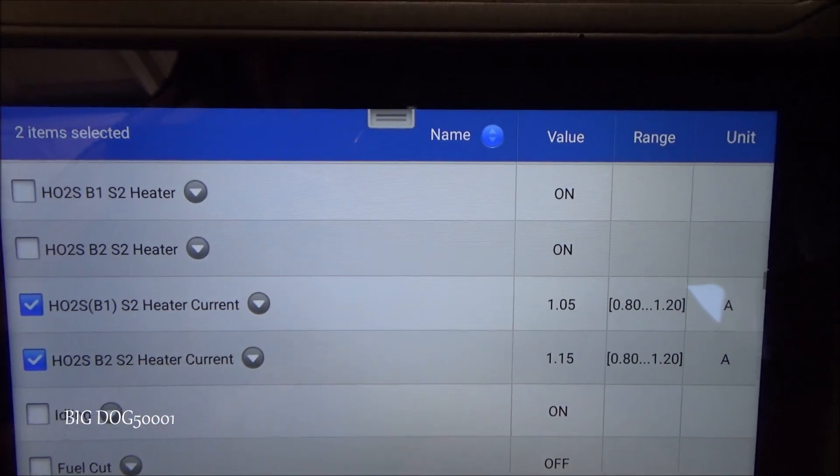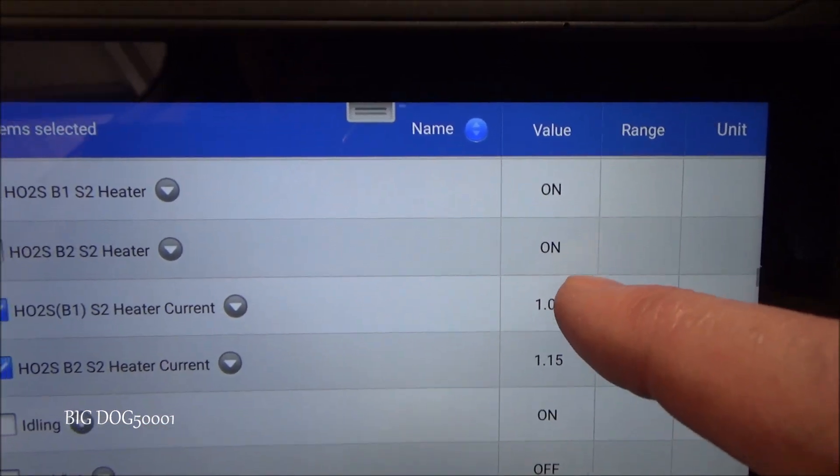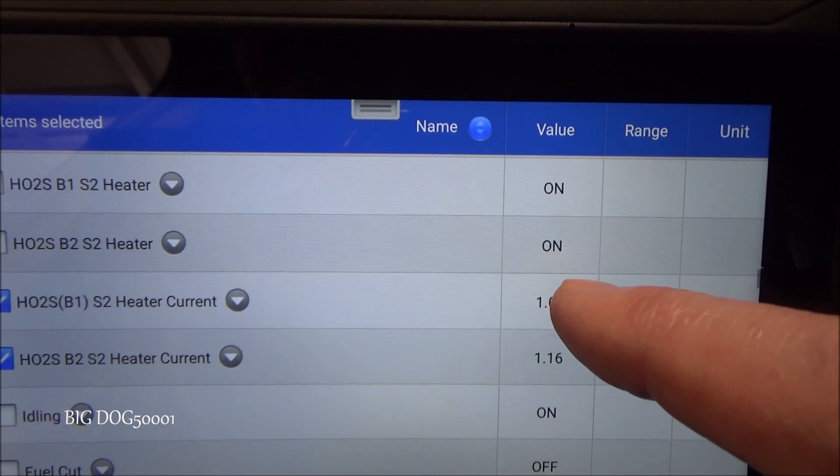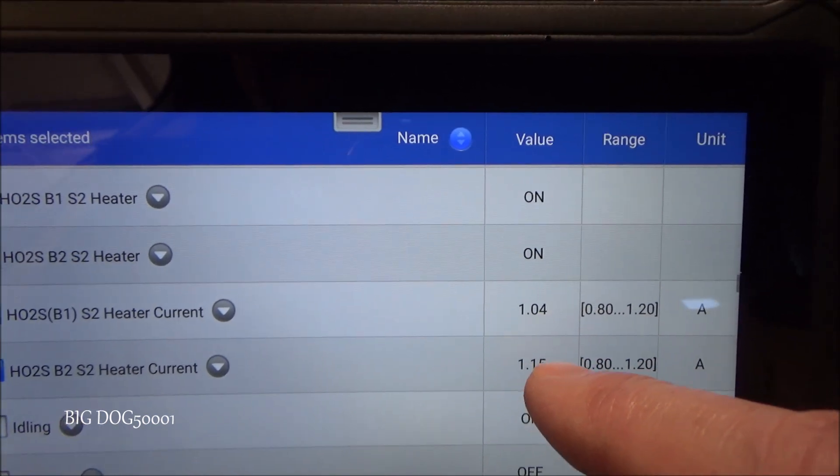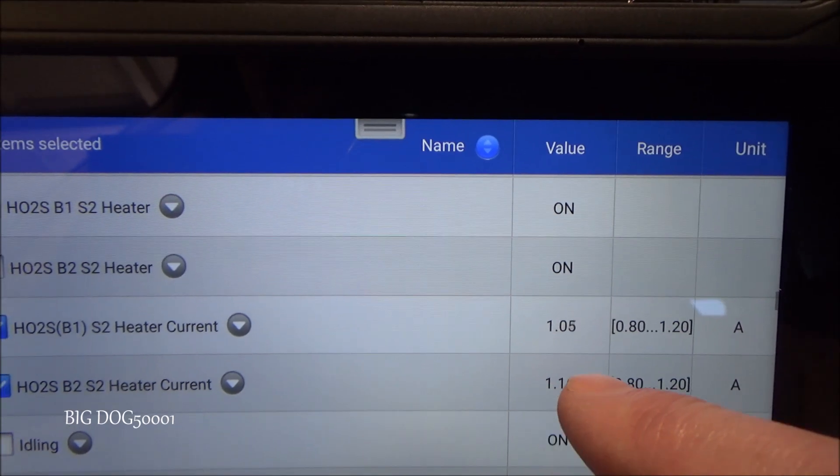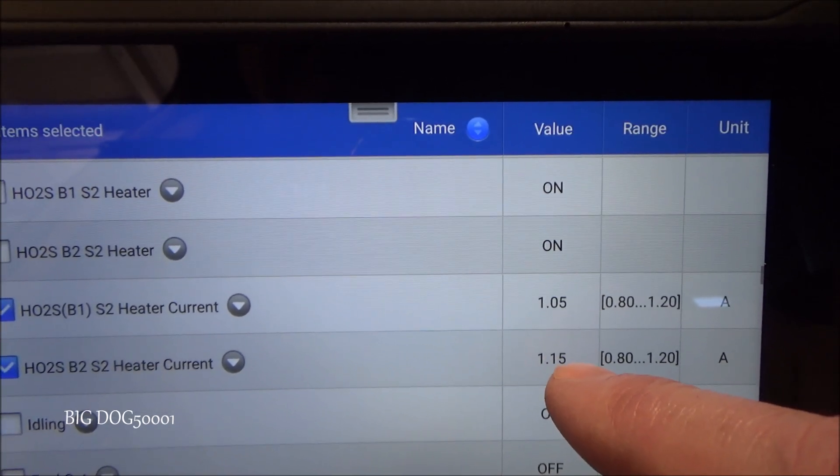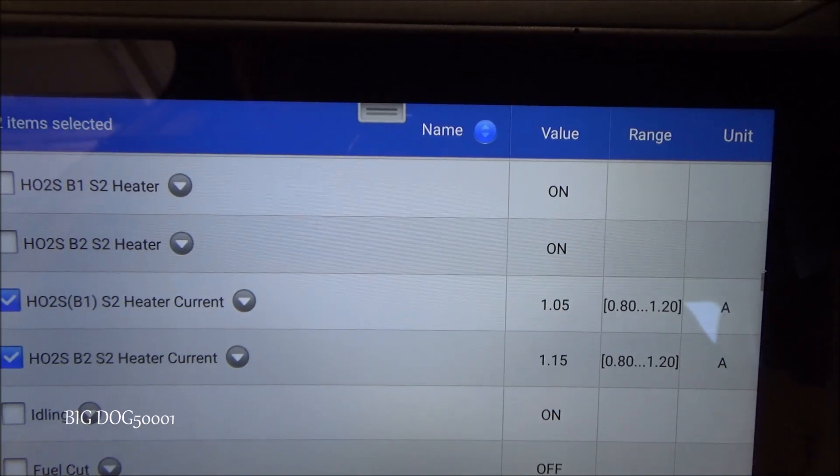Here's the amperage for the two oxygen sensor heaters. You can see Bank 1 sensor 2 right here. Bank 2 sensor 2 right here. So here's our one that we're concerned with. You can see it's definitely pulling a little more amperage than that one. Not a ton. But it's pulling a little bit.